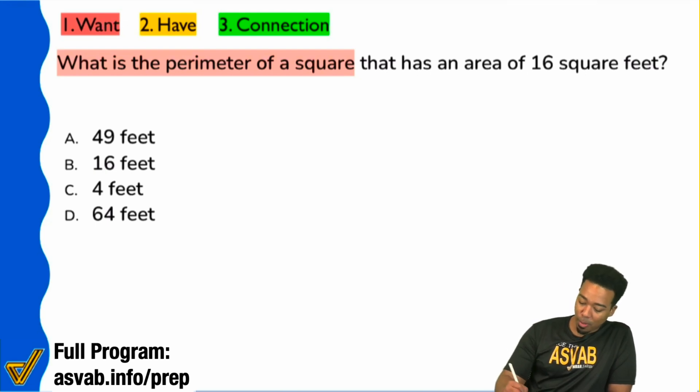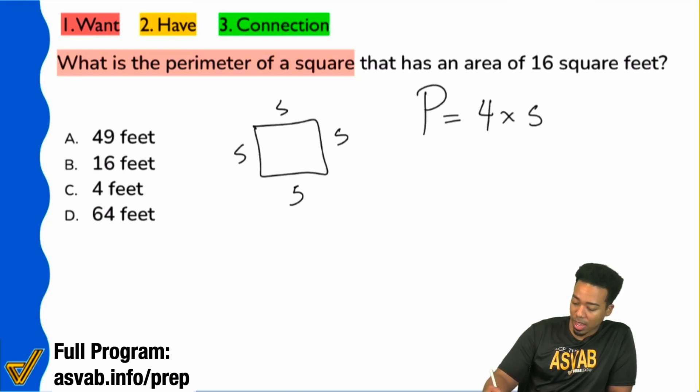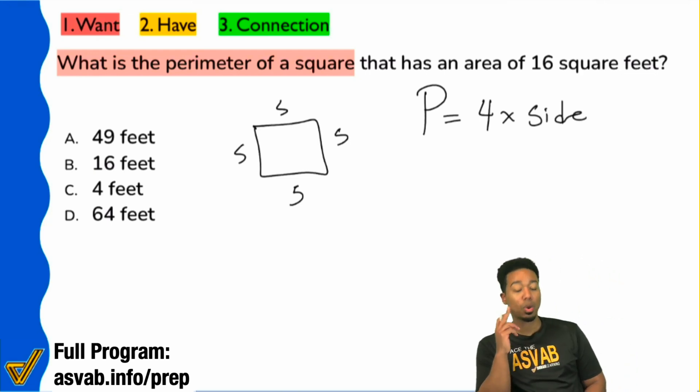And so remember, the perimeter of a square is all the sides added up. So we have four of these sides. So that's why the perimeter of a square is four times the side. That's why.